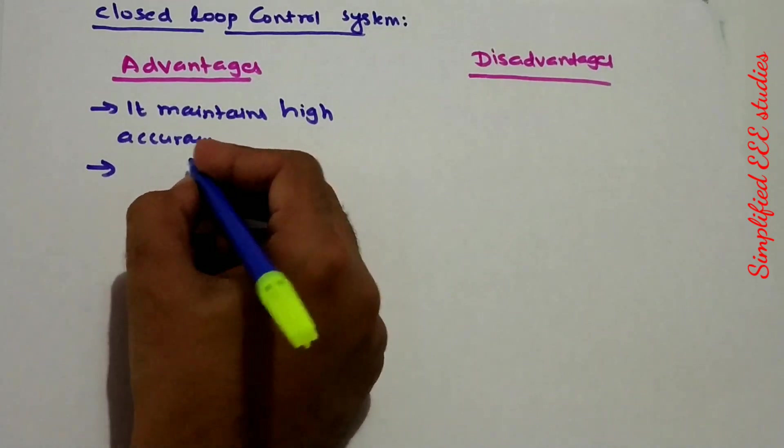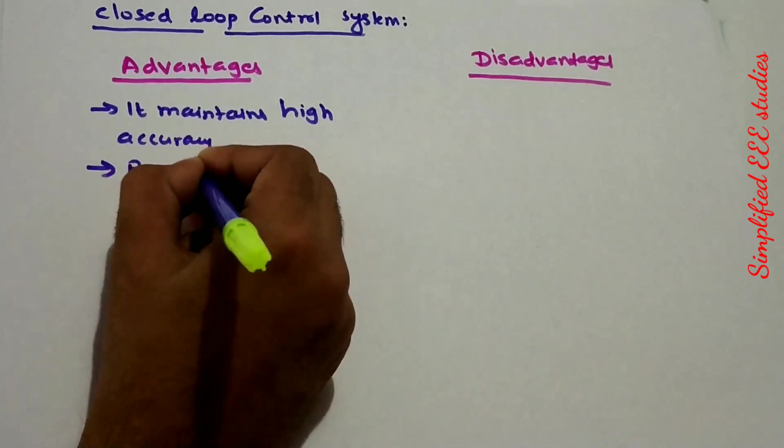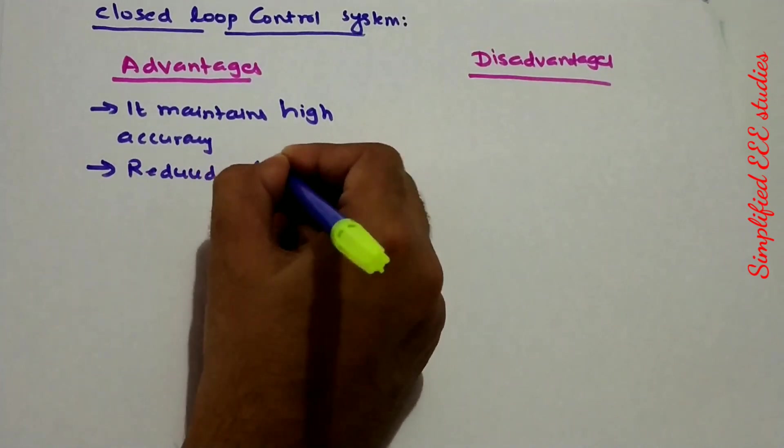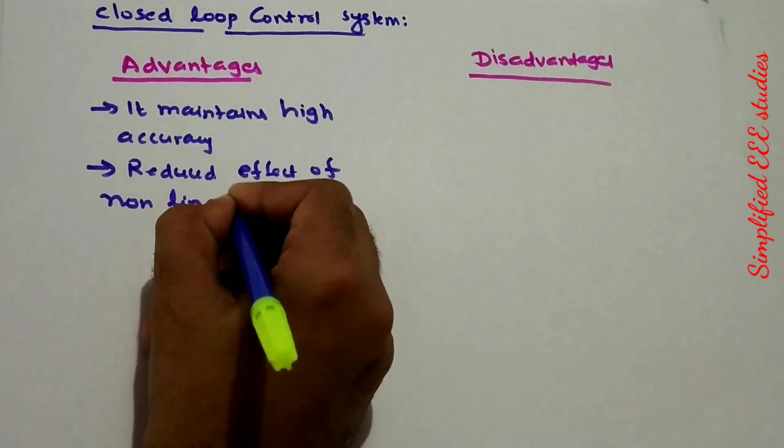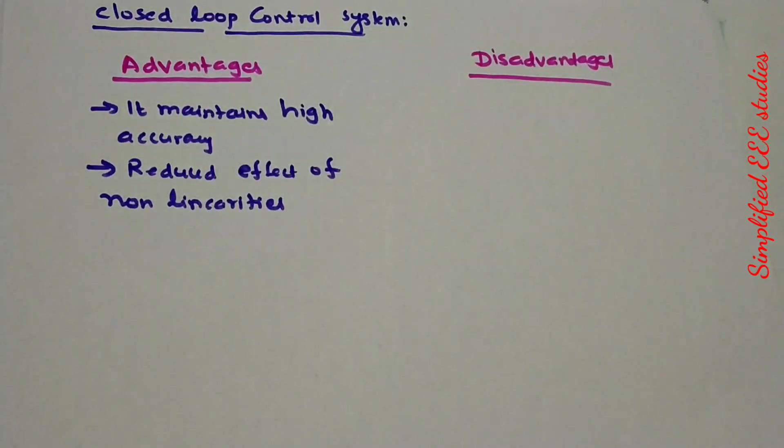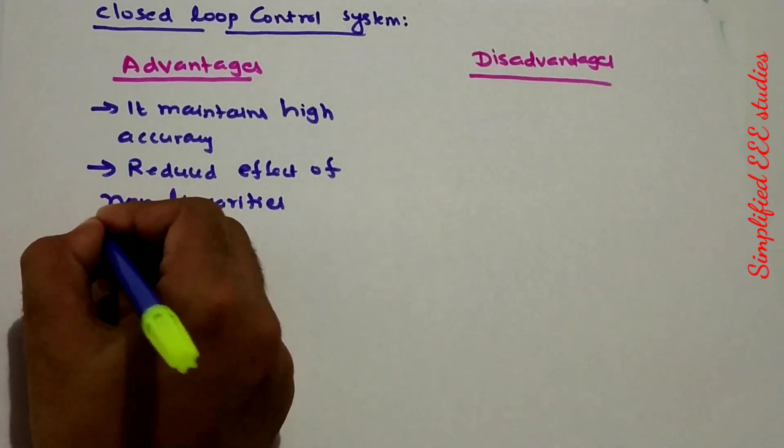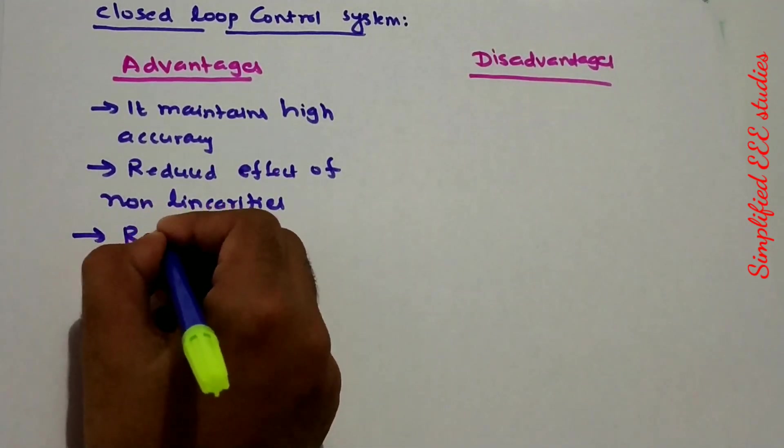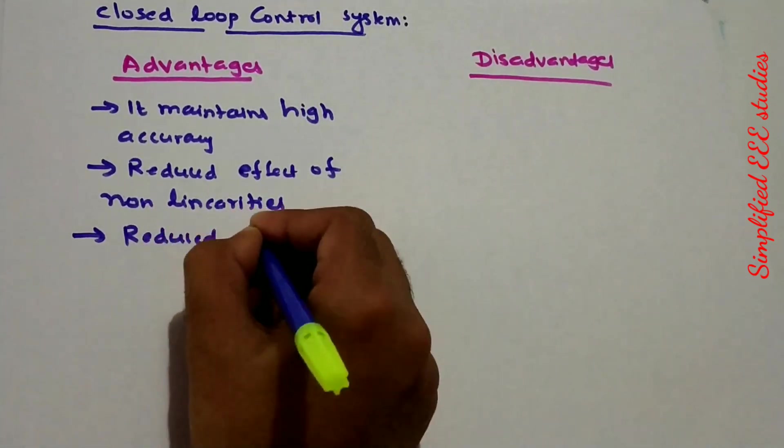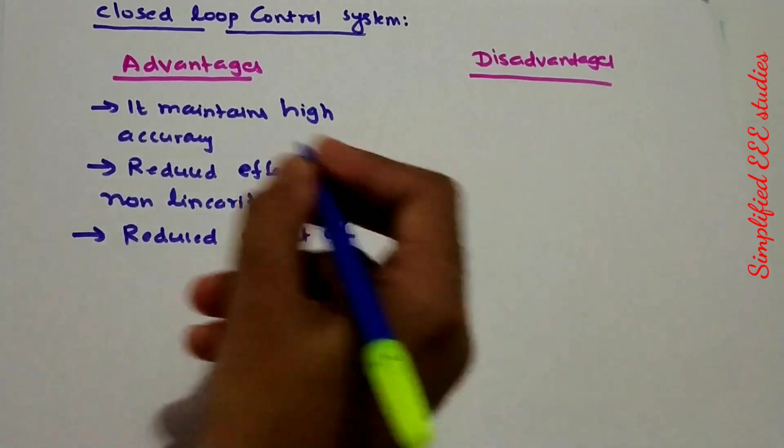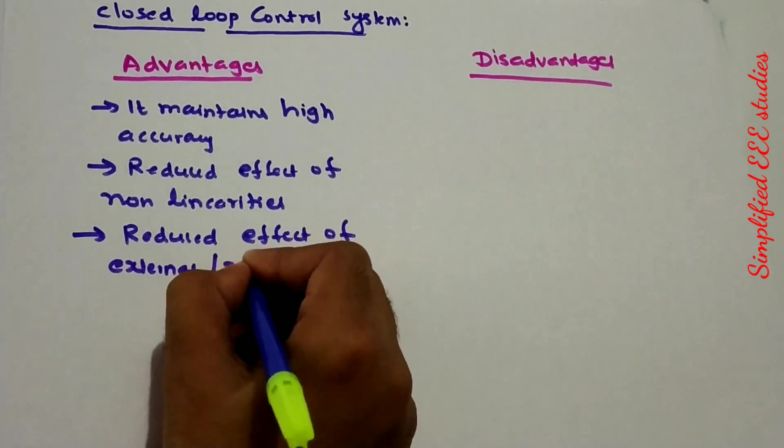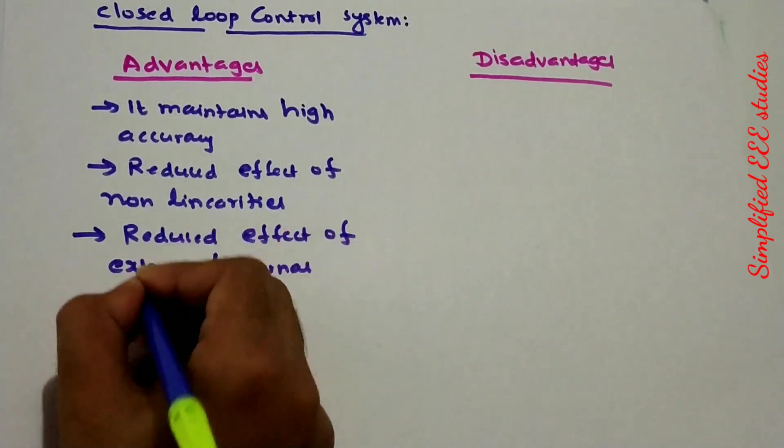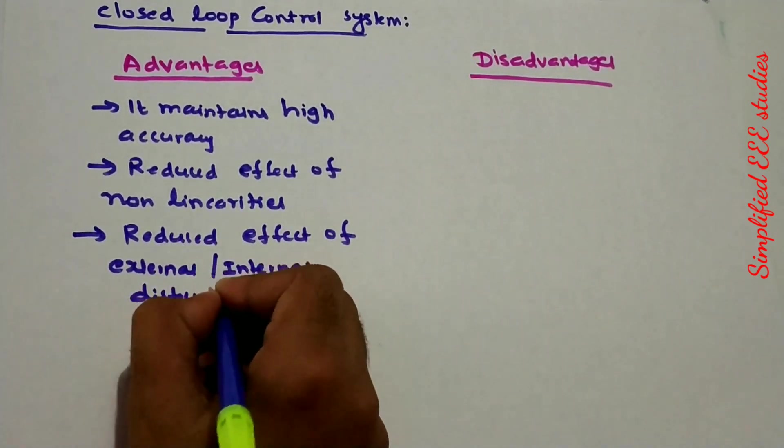Reduced effect of non-linearities. That is another advantage of closed loop control system. Then disturbance will be eliminated. Reduced effect of external and internal disturbance.